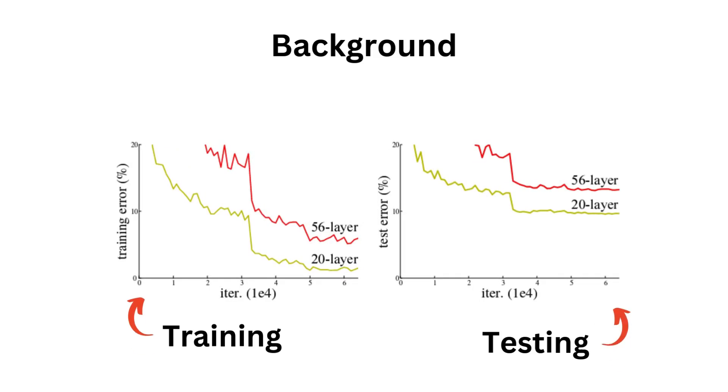At the time, it was fairly difficult to train networks with more than 20 layers. Even though they had more capacity, these networks didn't even overfit the data. It was just very difficult to train them.